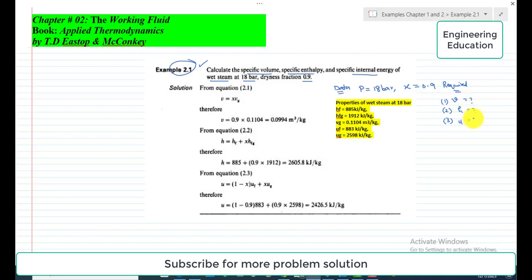Starting from here, if we visit the saturated steam table, our wet steam table, the wet steam properties at 18 bar are: hf, which is basically the specific enthalpy at the saturated liquid line, is 885 kilojoules per kilogram at 18 bar.